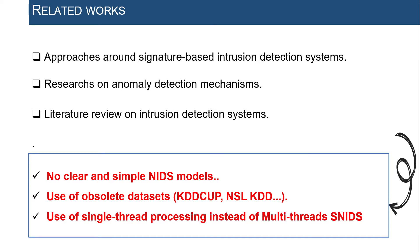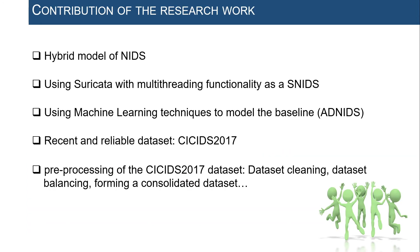Moreover, most works proposing hybrid IDS architectures have opted for single-threaded open-source SNIDS instead of multi-threaded ones. In this context, the present work aims at proposing a hybrid IDS based on a multi-threaded SNIDS and ADNIDS tested with the CICIDS 2017 dataset. Our contributions include: combining SNIDS and ADNIDS; using Suricata as a multi-threaded open-source SNIDS; using machine learning techniques for ADNIDS; and modeling the network baseline using the CICIDS 2017 dataset after pre-processing.